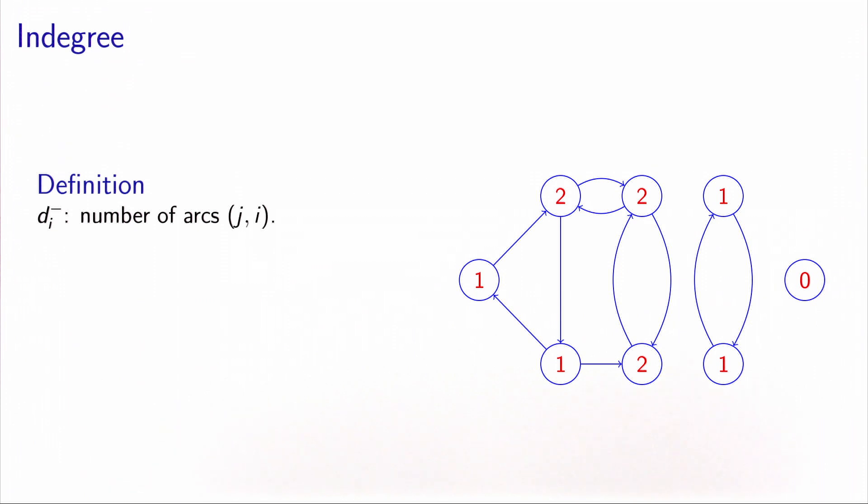If you look at the example on the right, this node has an in-degree of 1 because there is one incoming arc. This node has an in-degree of 2 because there are two arcs that are incoming. This node has an in-degree of 0 because there is no arc coming to this node.